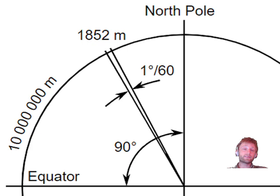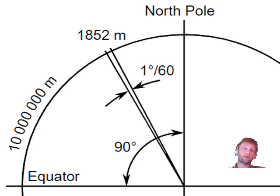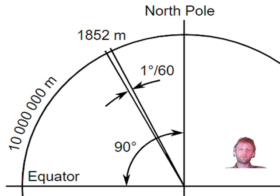As you can see in this diagram, 90 degrees from the North Pole to the equator is equal to 10 million meters.